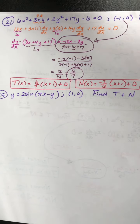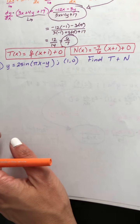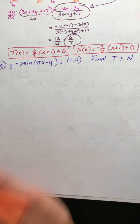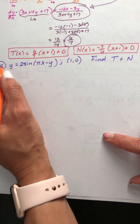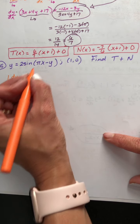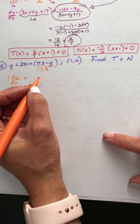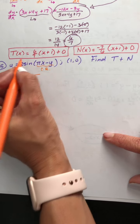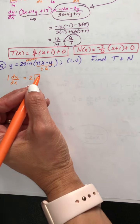Number 25. y equals 2 sine of (pi x minus y) at the point (1, 0). We need to find t and n again, so we need to implicitly differentiate. The derivative of y is 1, but because it was a y we have to put dy dx equals... and we're going to have to use the chain rule on the inside there. I'll leave the coefficient of 2 out front. The overall function is sine.